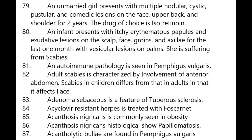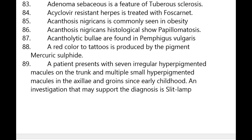Acantholytic cells are found in pemphigus vulgaris. A red color tattoo is produced by pigment mercuric sulfide. A patient presents with seven irregular hyperpigmented macules on the trunk and multiple small hyperpigmented macules in the axilla and groins since childhood; the investigation to support the diagnosis is slit lamp examination of the eye.